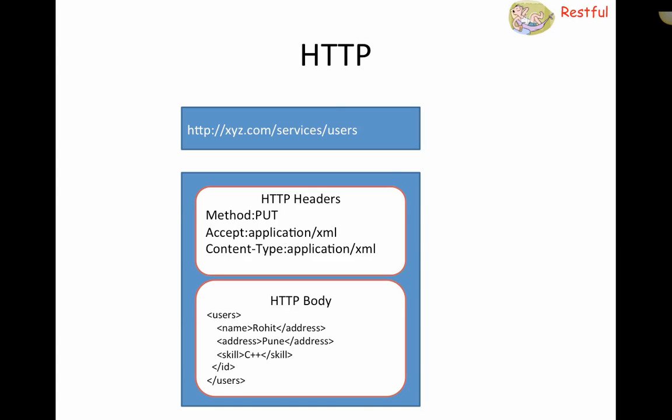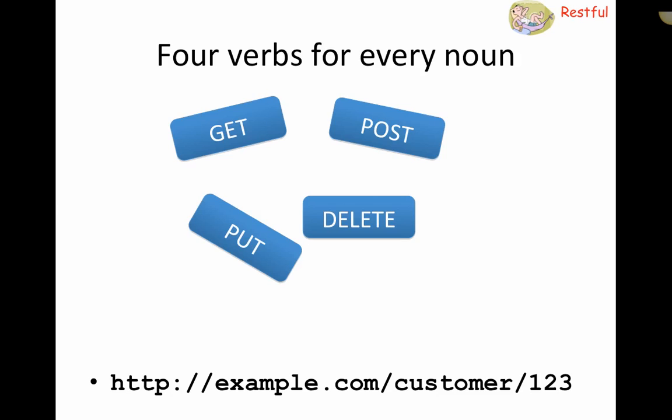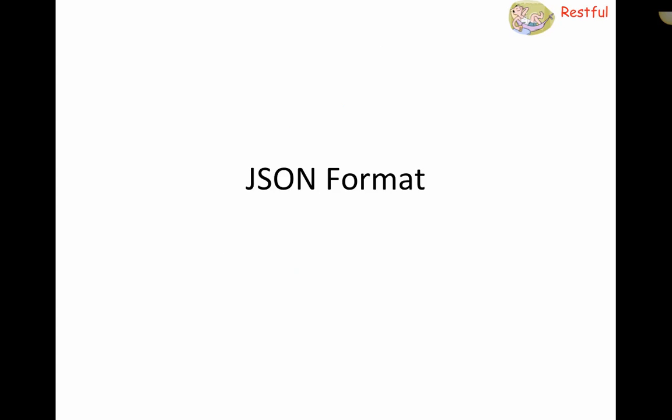There are four verbs for every noun — a noun is an entity, and there are four verbs to act on it. For example, example.com/customers/123 is where you find customer 123. You can perform CRUD operations: Create using POST, Retrieve using GET, Update using PUT, and Delete using DELETE. These are all HTTP operations, and the beauty of RESTful is that GET, PUT, POST, and DELETE map directly to the CRUD operations of a database.